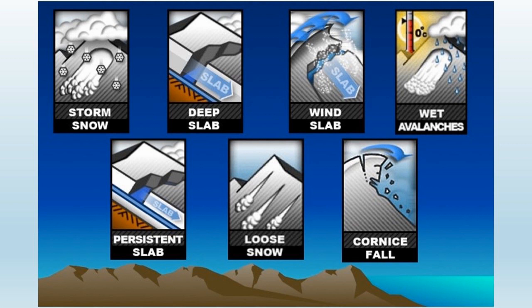In this image, we can see the seven most likely causes of avalanches. They can be snowstorms, a deep slab movement, a wind slab, wet avalanches, a persistent slab, loose snow, and a cornice fall.